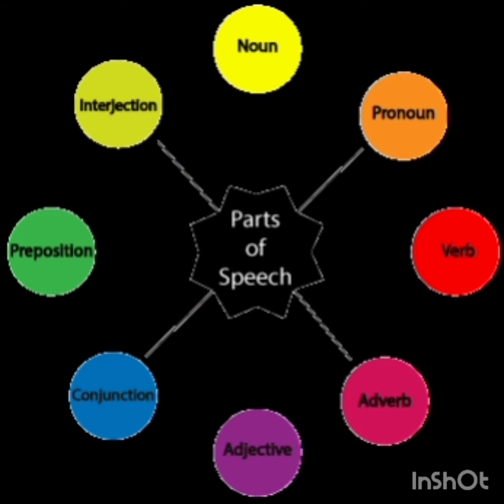A proper noun refers to one particular person, place, or thing. For example, 'Ramesh is a boy' — here 'Ramesh' is a proper noun because I am specifically talking about a boy whose name is Ramesh. Now, what is a common noun? Try to notice the difference between these two.